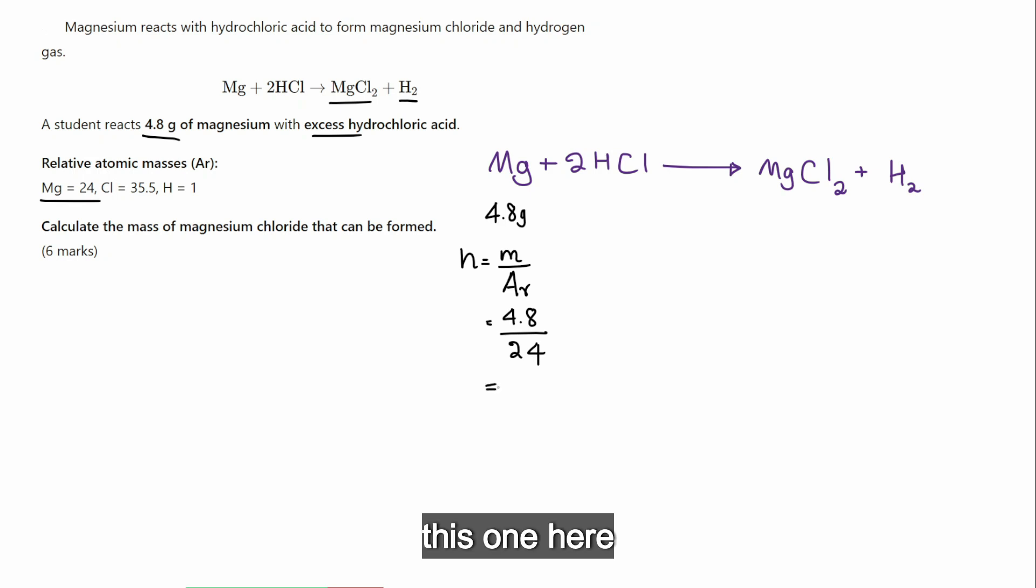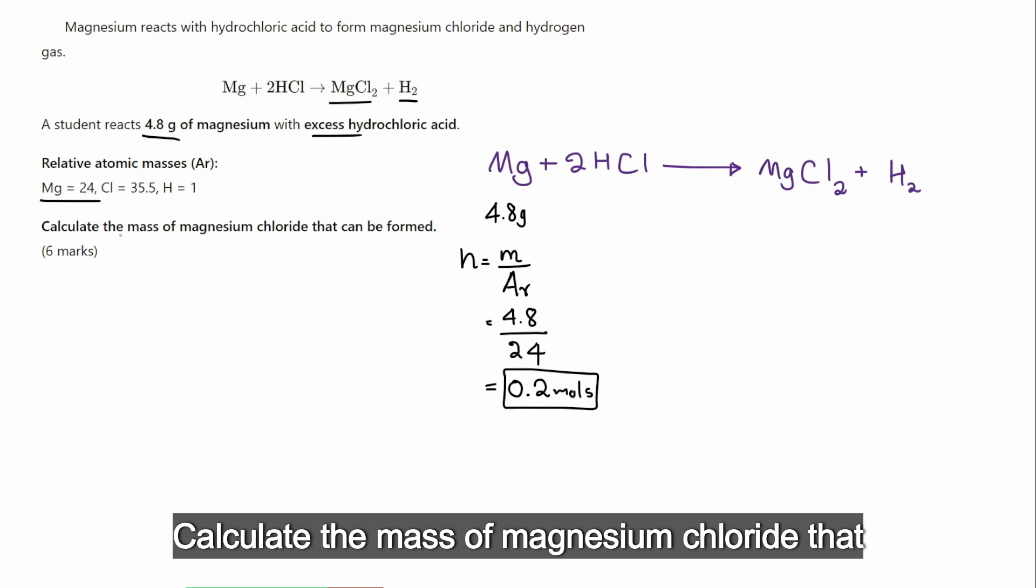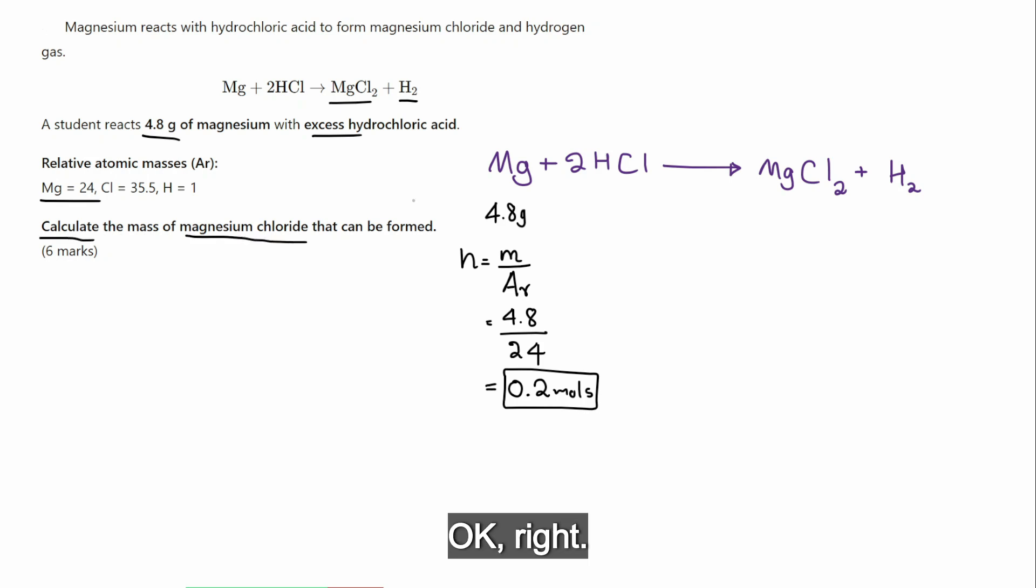So, we know this one here is 0.2 moles. Calculate the mass of magnesium chloride that can be formed. Okay, right. So, the question is the mass here.